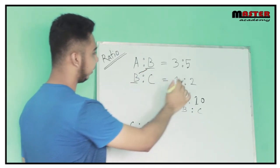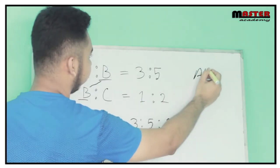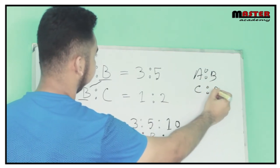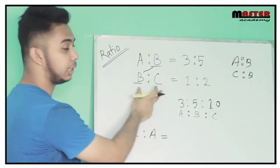So for this example, A is to B, which is C is to B. So we have A is to C.